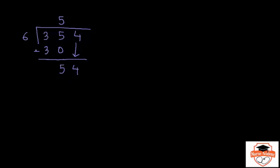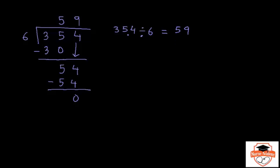Repeat the same steps — the question is: 6 times what is 54? The answer is 9. Write a 9 next to the 5 on top, and because 6 times 9 is 54, when you subtract you have nothing left over and there's no other digit to bring down. So 354 divided by 6 is 59. If you want to check, remember you can always turn a division sentence into a multiplication sentence: multiply the divisor by the quotient. So multiply 6 by 59; if you get 354 back, you got it right.